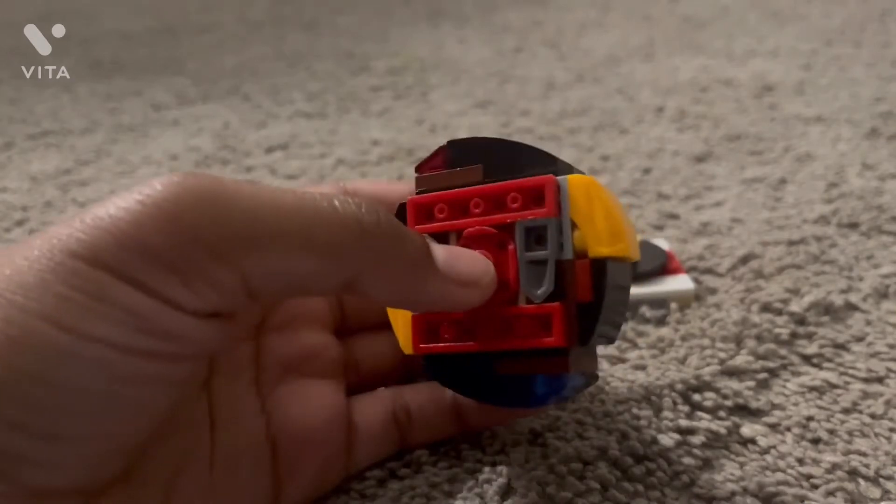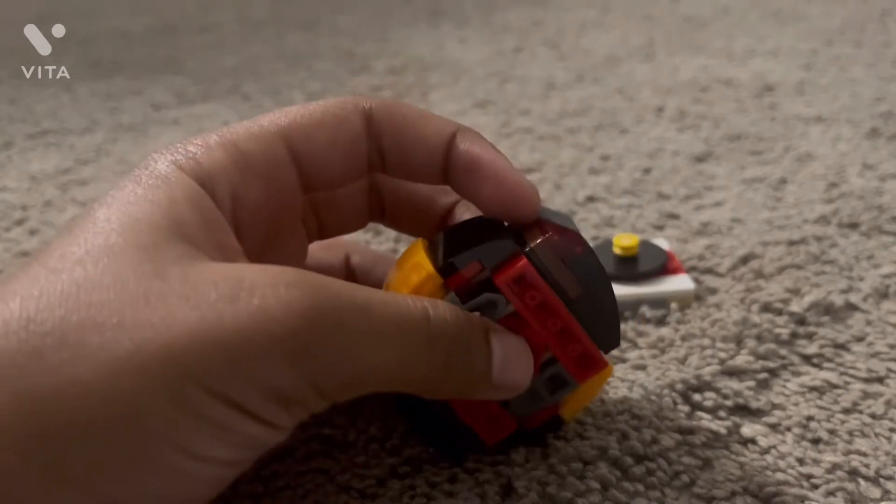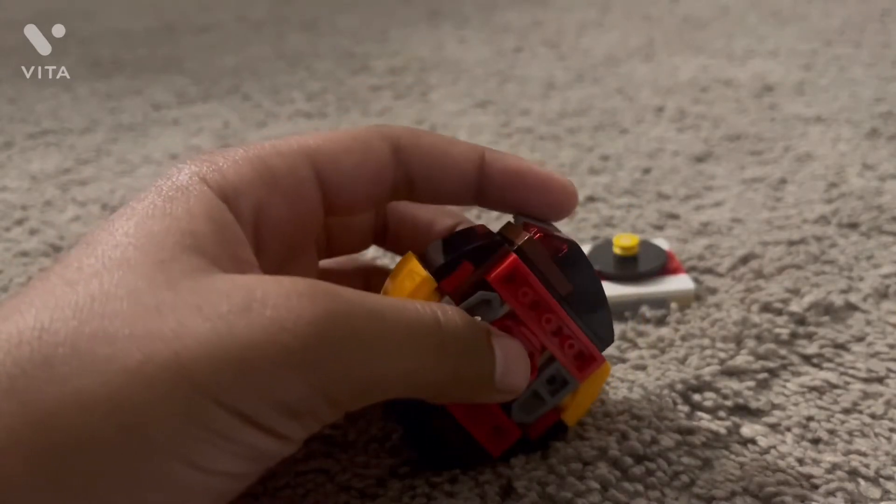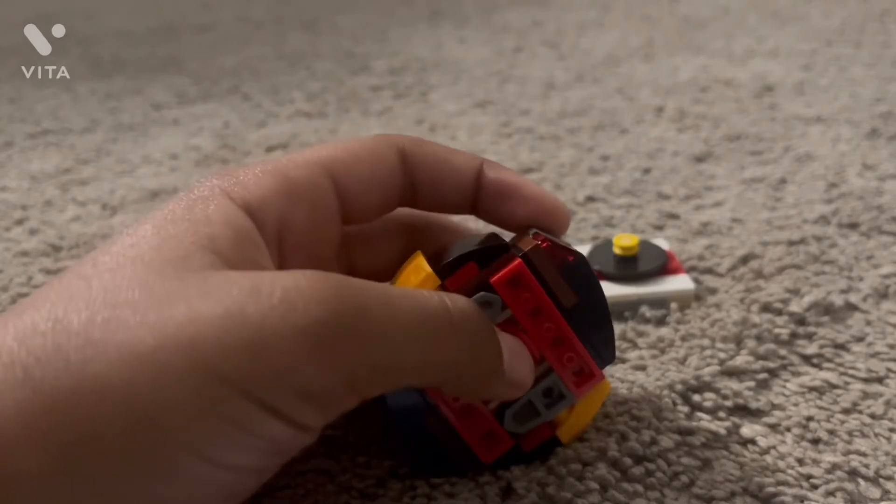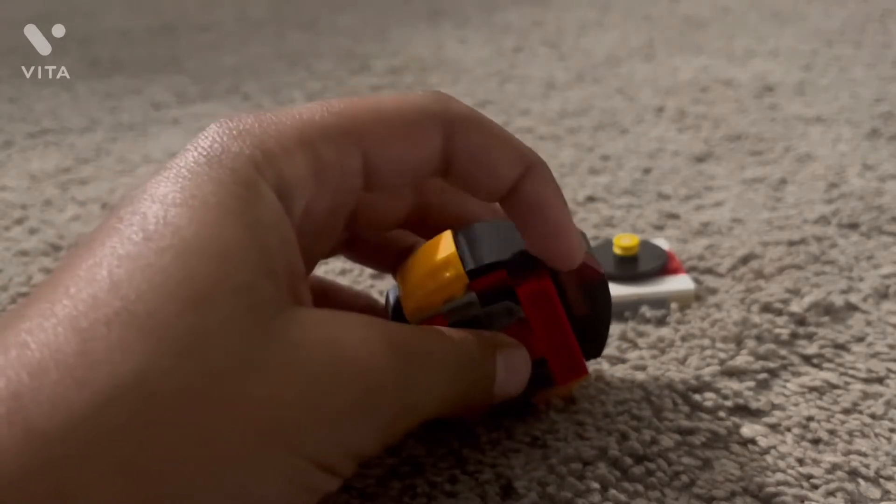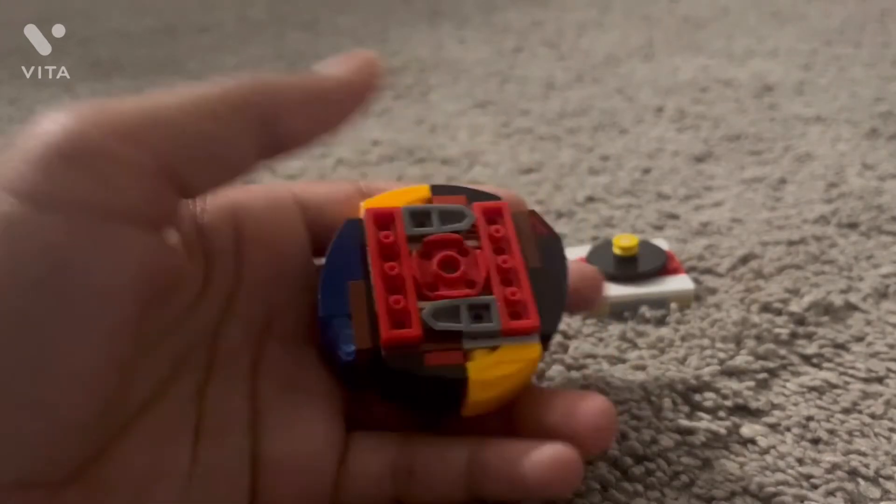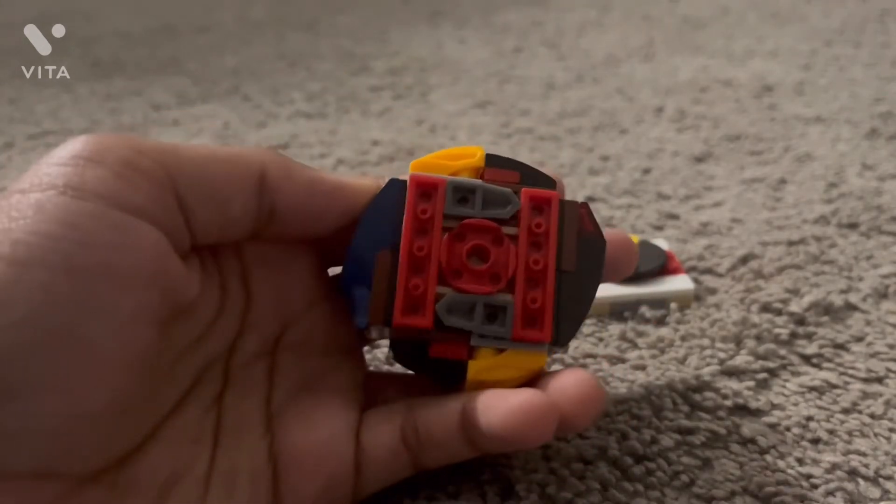But yeah this is a dual spinning Bey. It has a smash attack mode in right spin, but the smash attack mode isn't really, I mean I guess you could call this a smash attack mode in left spin. But yeah this is the only contact point that takes recoil. Other than that this Bey is pretty stable.